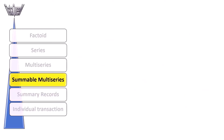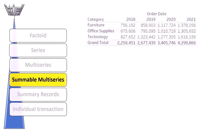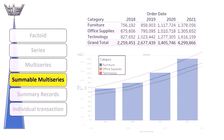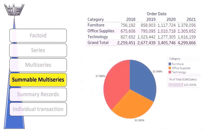Now comes the summable multiseries. This has several metrics and a common axis. The summation of the metrics provides the grand total. For example, we can compare rate of change, correlation between metrics, and percentages with the summable multiseries dataset.